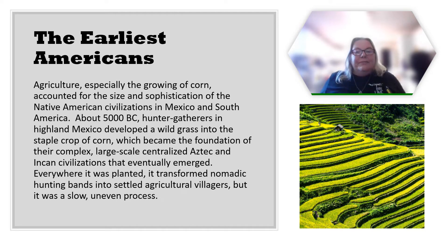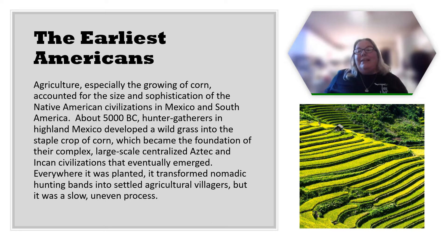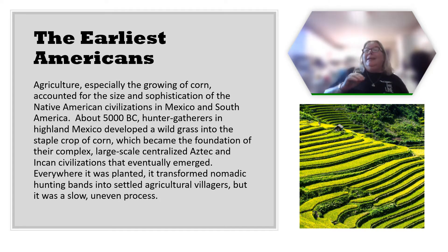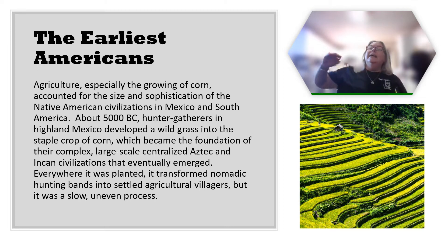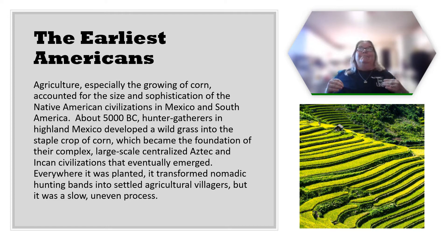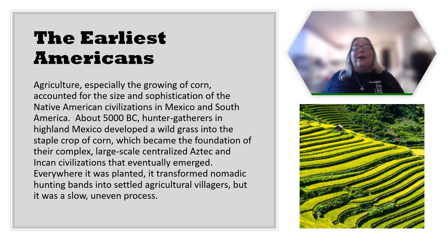By about 5000 BC, hunter-gatherers in highland Mexico developed a wild grass into the staple crop of corn, which became the foundation of the complex, large-scale, centralized Aztec and Incan civilizations that eventually emerged. Everywhere corn was planted, it transformed nomadic bands into settled agricultural villagers, though it was a slow and uneven process. This picture shows a terrace farm in Peru — because Peru is very mountainous, they carved step terraces into the land to create fields, which is actually a very efficient and ecologically sound way to farm used for thousands of years.